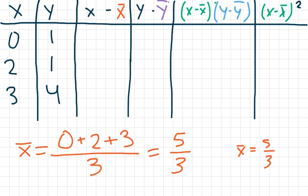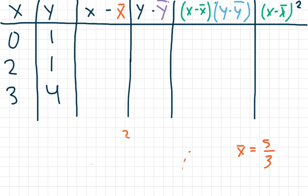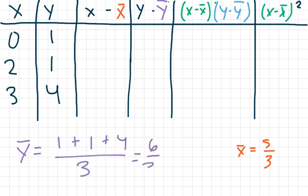Let's do the same thing for y. For the mean y value, we have one plus one plus four divided by three. That's six divided by three, which equals two. So the mean y value equals two.